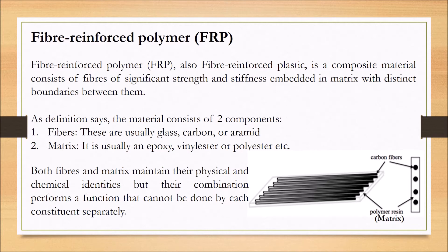The second constituent is matrix, which is usually epoxy resin. The image shows examples of both constituents — matrix and fiber. The fiber is a longitudinal running member which gives directional strength based on the direction of alignment. The matrix material binds the fiber, and together they form FRP materials, which is fiber reinforced polymer.